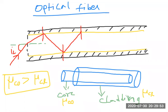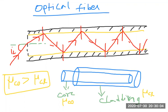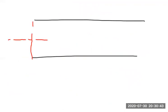The ray is repeatedly reflected inside the core and finally comes out from the other end. This is due to multiple Total Internal Reflections inside the fiber. The first angle at which the ray enters the fiber is called the launching angle. At each reflection, the angle of incidence is greater than the critical angle.